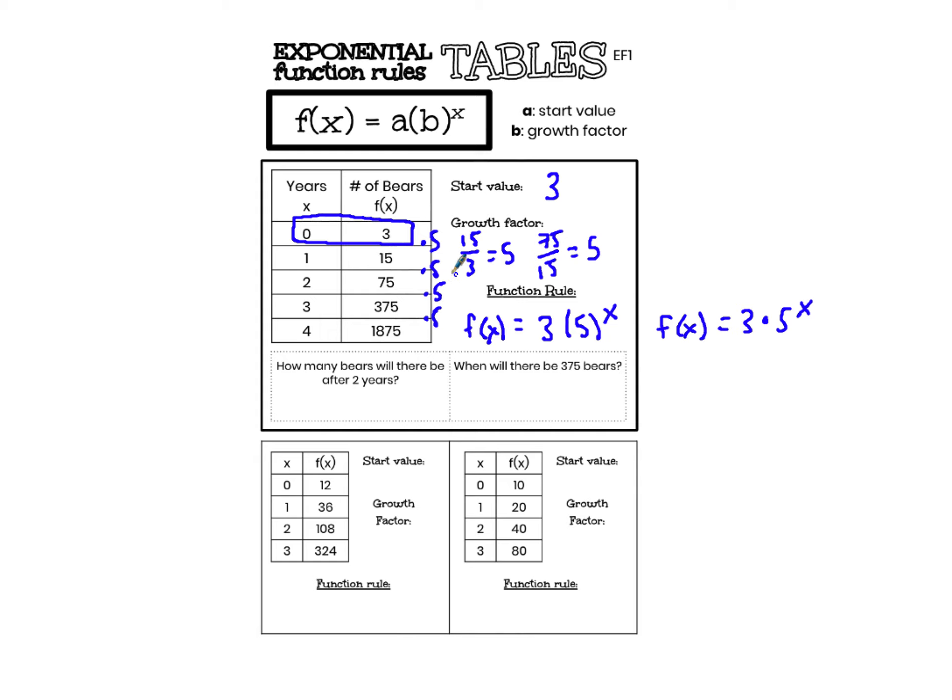In addition to using the table to write the function rule I can also use the table to answer some questions about the situation. So how many bears will there be after two years? The information I'm being given is that x equals 2. And then I'm asked to find what is f(x). So after two years x equals 2, f(x) equals 75. There are 75 bears. Use the table to look for what is the number of bears after two years.